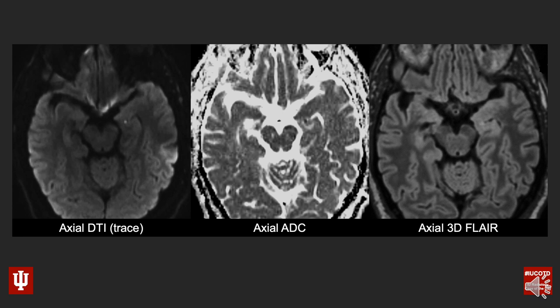The image in the middle is an axial ADC map that corresponds with the same location and same slice, and then the image on the right is an axial 3D FLAIR. So take just a few minutes to look at those images — again, keep in mind the history here was an acute episode of confusion. Try to put that all together.